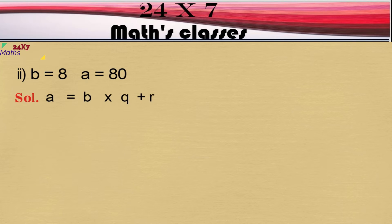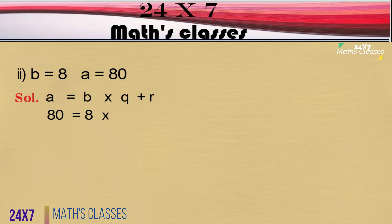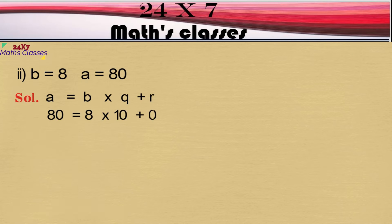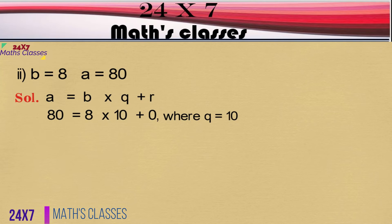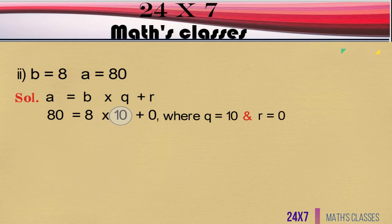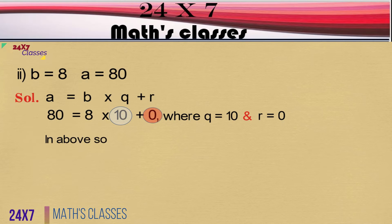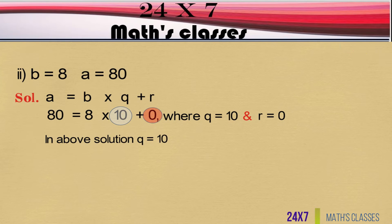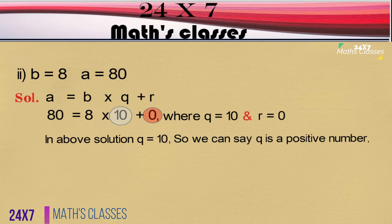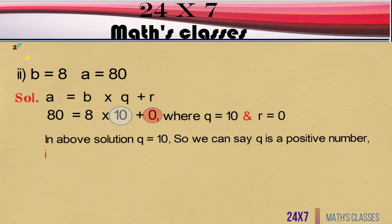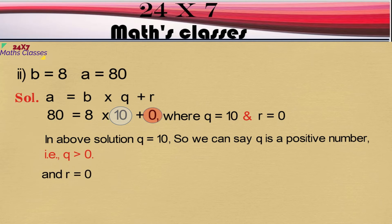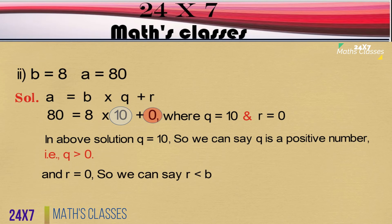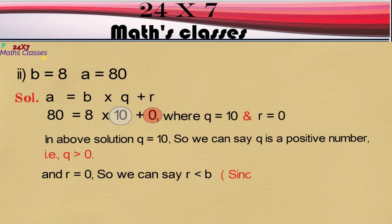By dividing 80 by 8, we can write it as 80 = 8 × 10 + 0, where q is equal to 10 and r is equal to 0. So we can say q is a positive number, that is q > 0, and r is equal to 0, so we can say r < b, since 0 < 8.